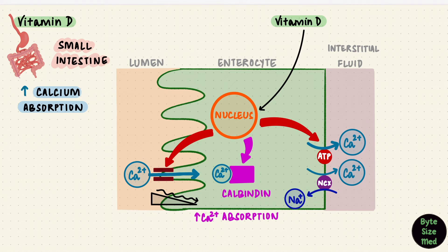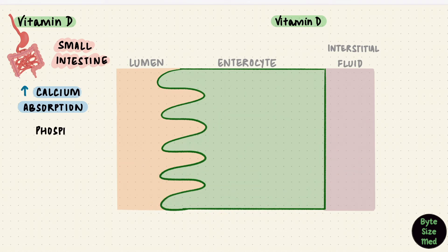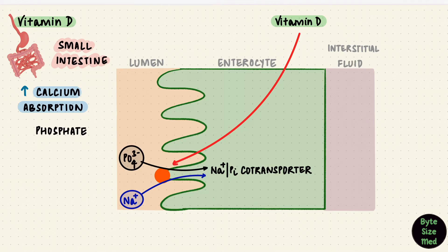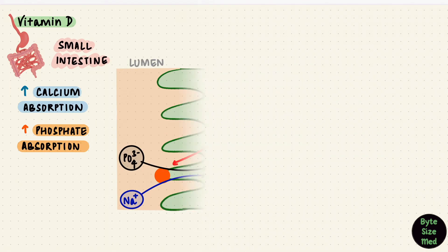Calcitriol thus increases calcium absorption. But what about phosphate? Phosphate gets taken up by a sodium phosphate co-transporter. Calcitriol upregulates this transporter. More transporters, more phosphate absorption. So it can increase both calcium and phosphate absorption. That's on the small intestine.